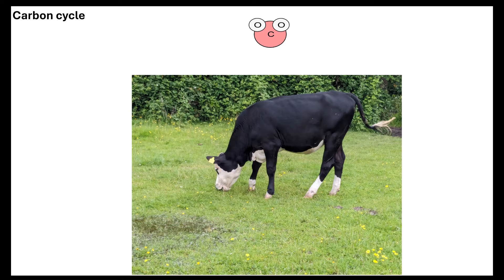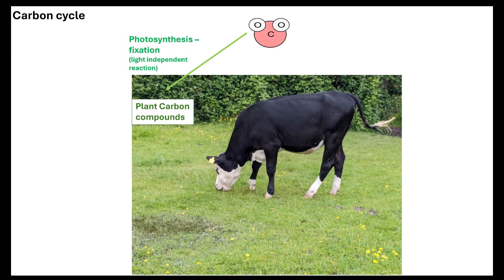We need to think about carbon dioxide and the fact that carbon dioxide is in the atmosphere. We know from module 5 photosynthesis that fixation of carbon dioxide occurs in the light independent reaction. When plants photosynthesize, they take that carbon dioxide and fix it to the RuBP to make GP, which then gets converted into TP.